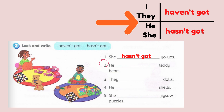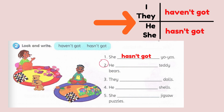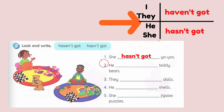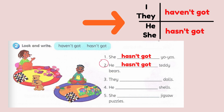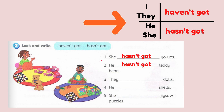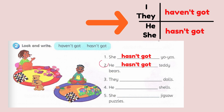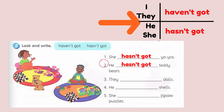Now, try to guess the answer for number 2. For number 2: he hasn't got teddy bears. As you can see in the picture, budak laki tu tidak mempunyai teddy bear. So for number 3, 4, and 5, try to answer on your own.